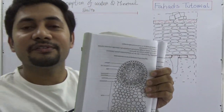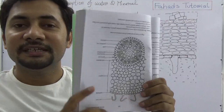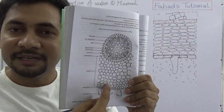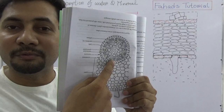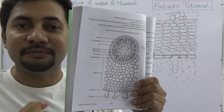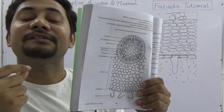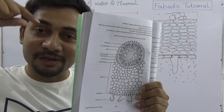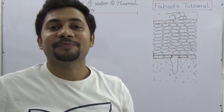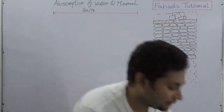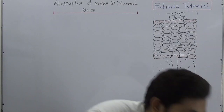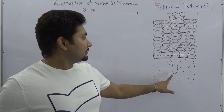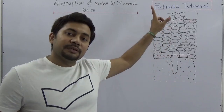This is the pathway that water will follow going upward. When xylem tissue receives the water, its responsibility is to carry that water up to the leaves. Water is absorbed through the root hair and then moves upward — let's understand how this works.